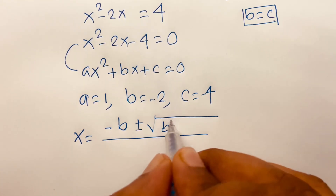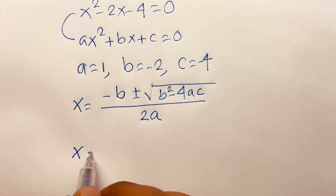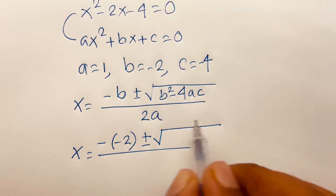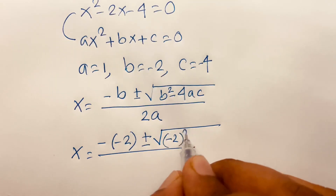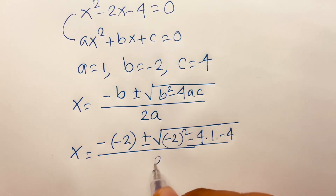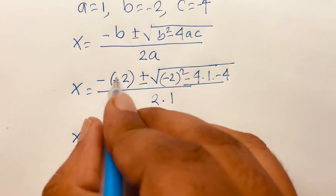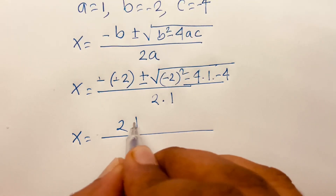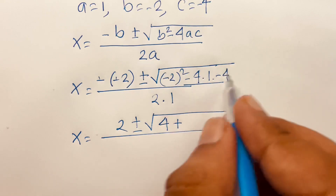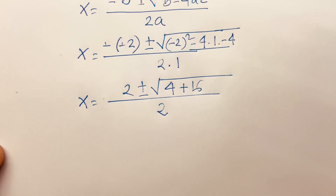We know the quadratic formula: x equals minus b plus or minus square root of b squared minus 4ac, over 2a. So x equals minus b — b is minus 2 — plus or minus square root of minus 2 whole squared minus 4 times 1 times minus 4, over 2 times 1. That gives us 2 plus or minus square root of 4 plus 16, over 2.